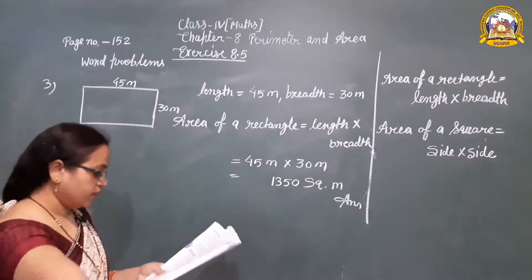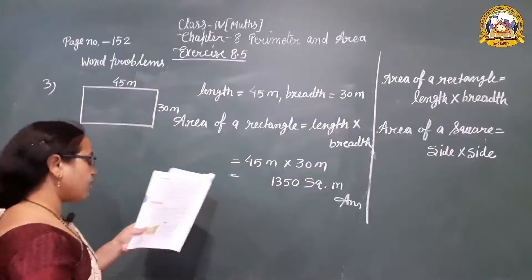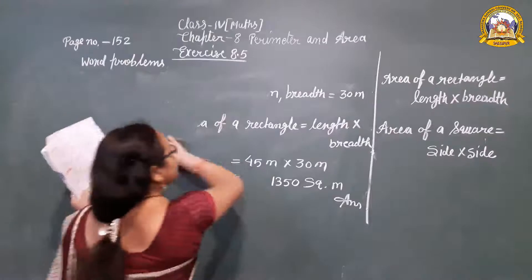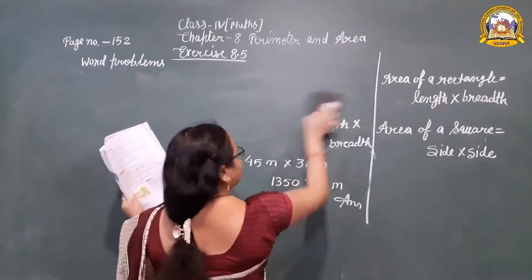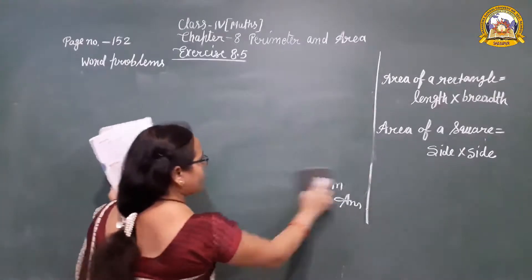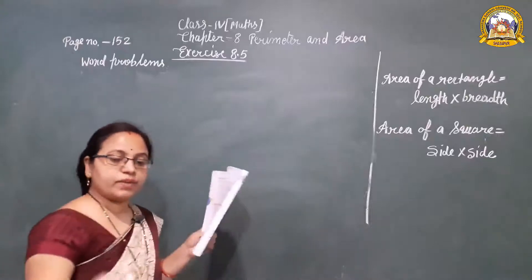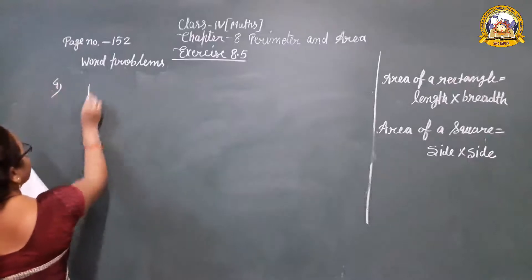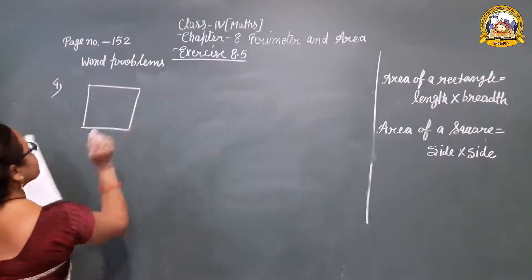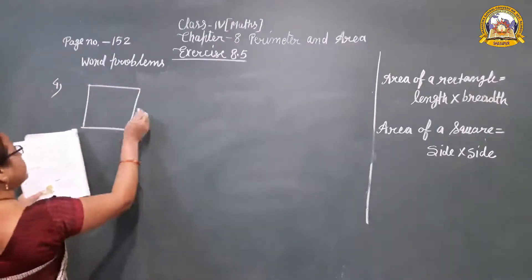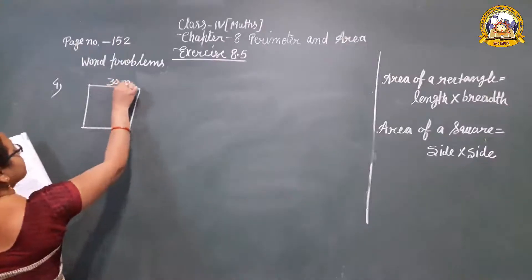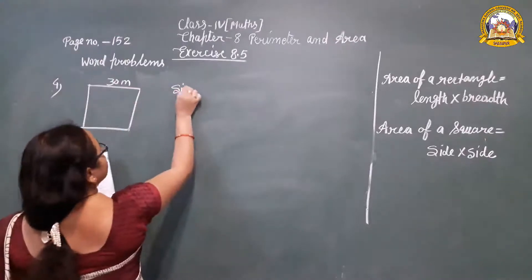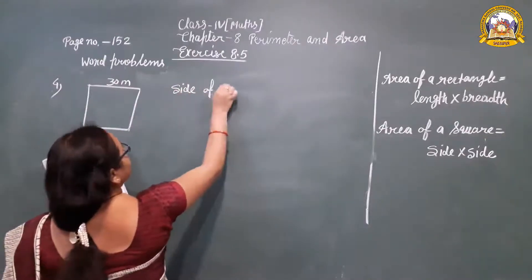Now the last question, question number 4: the length of the side of a square shaped field is 30 meters. The field is in square shape, so we have to apply the formula for area of a square. Since all sides of a square are equal, the other side is also 30 meters.